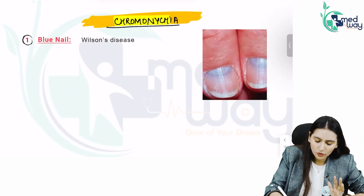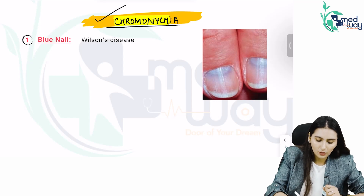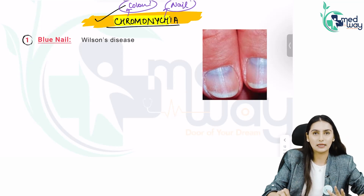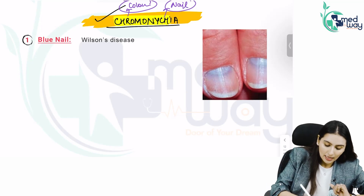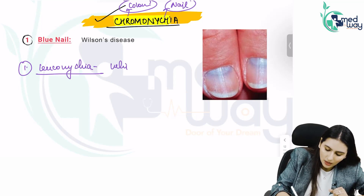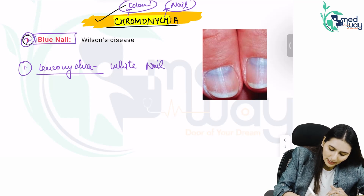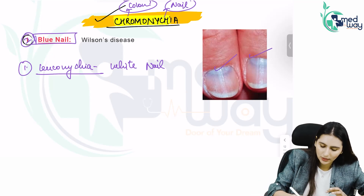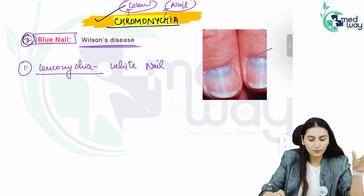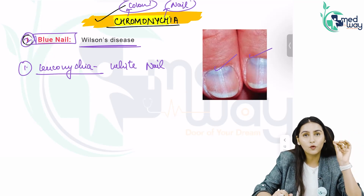Coming on to the next topic: chromonychia. Chromonychia basically means that you have colour in the nail — 'chromo' is colour and 'nychea' is nail. The first thing we saw was leukonychia, the white colour of the nail. The second thing is a blue nail, which is seen in Wilson's disease — the nail is clearly blue in colour.